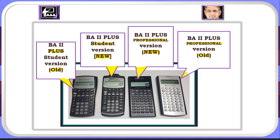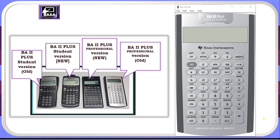You can use one of these four calculators, or you can use the BA 2 Plus emulator. Here I am using the BA 2 Plus emulator — this is a screen-based software which can be used to perform TVM calculations. First of all, on the top right we have the ON button, and we will click this button to start the calculator.